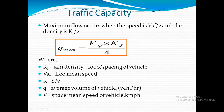Jam density is 1000 upon the spacing of the vehicle, and VSF is the free mean speed. Q equals the average volume of vehicles per hour, and V is the space mean speed of the vehicle in KMPH. According to that, you can easily calculate the volume of vehicles per hour.